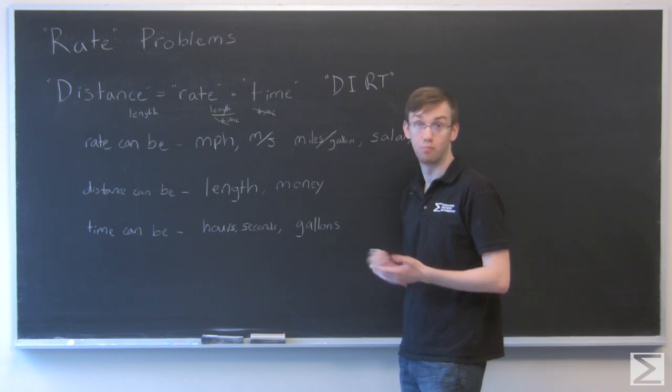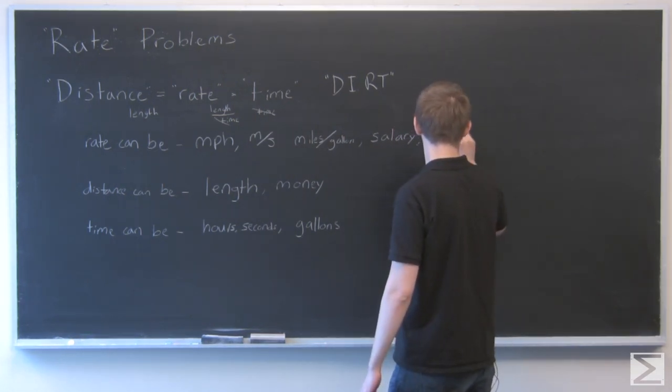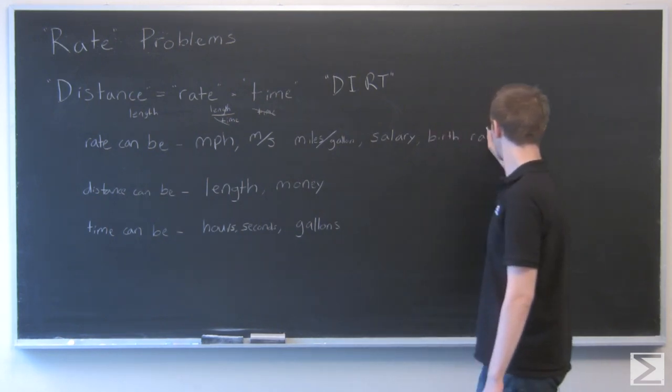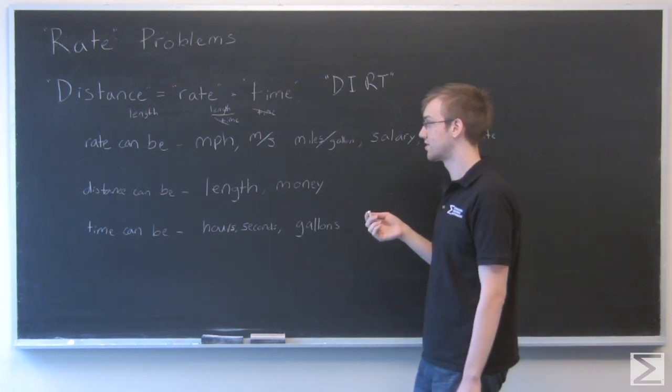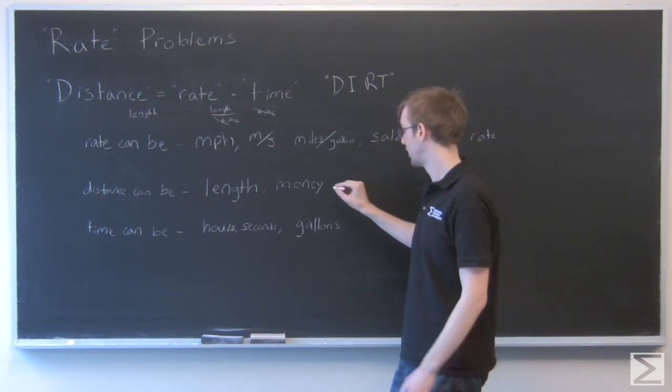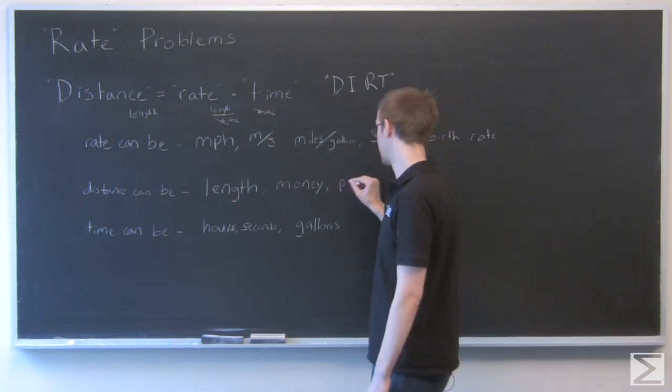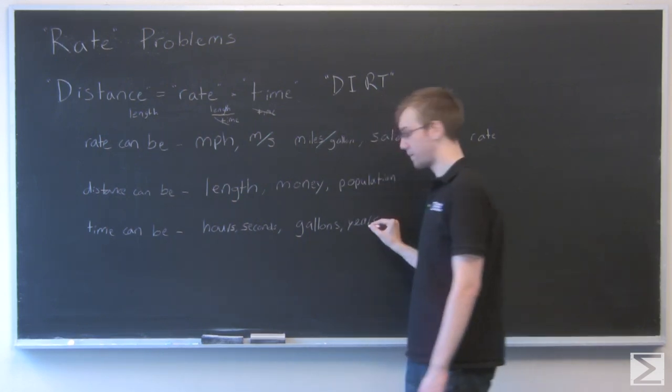Another example would be a birth rate, a rate of change of a population. In this case, you're saying a certain number of people are born per year. So your distance would be your population and time would just be in years or something like that, decades.